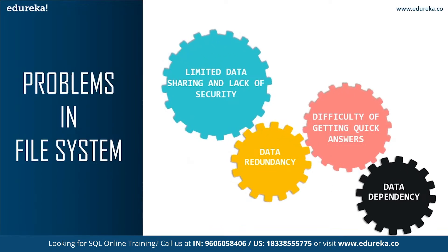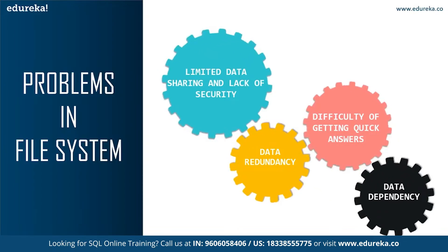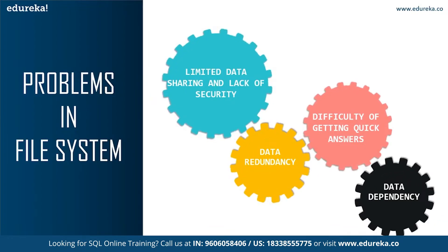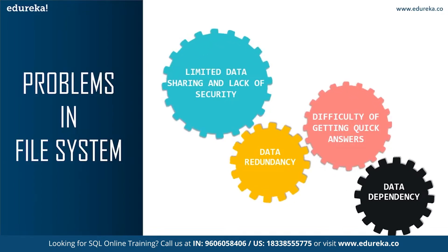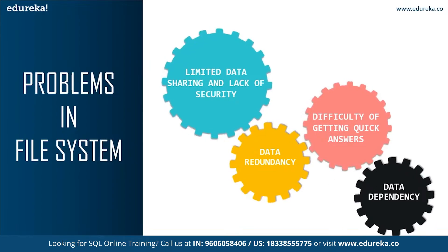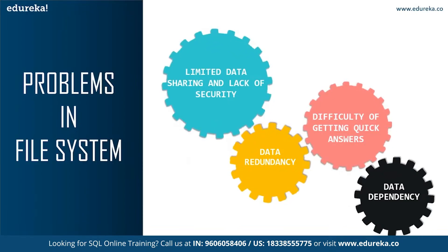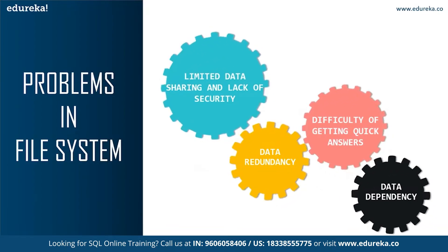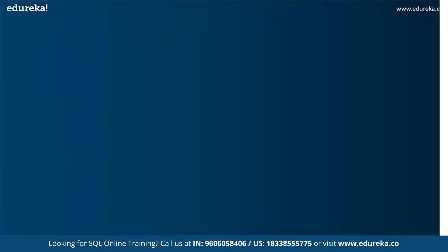The next problem is data dependence. In the file system, files and records are described by a specific physical format that is coded into the application by the programmers. If the format of any one record is changed, then we need to make sure that all the remaining records' format is updated. Any changes in storage structure or access methods could greatly affect the process and might result in failure of that particular application. So these were a few problems faced using the file system, and the solution for this is SQL and database.